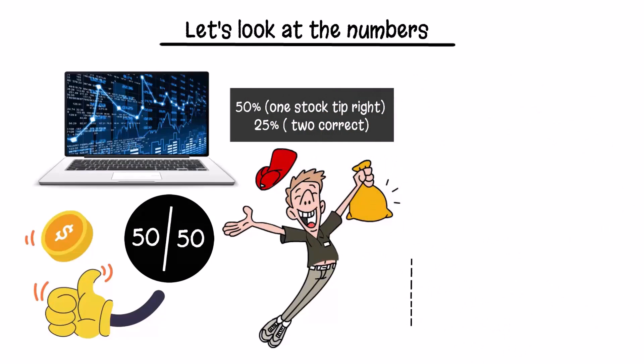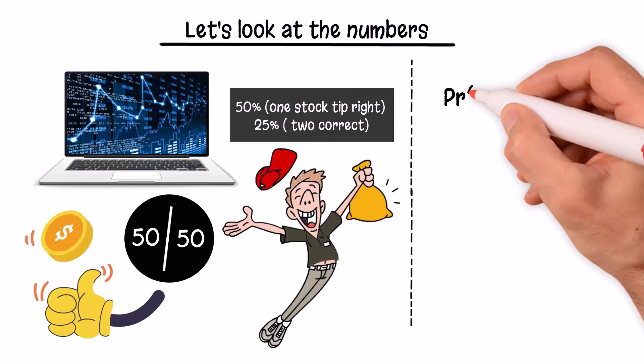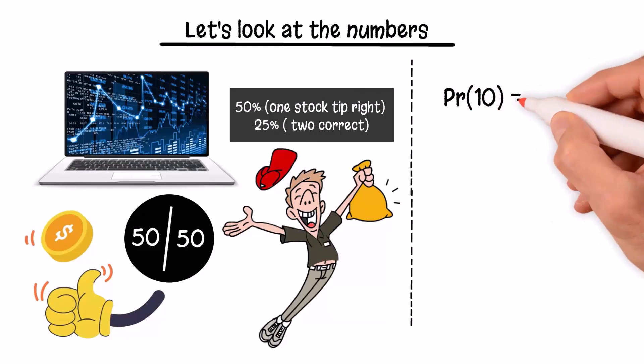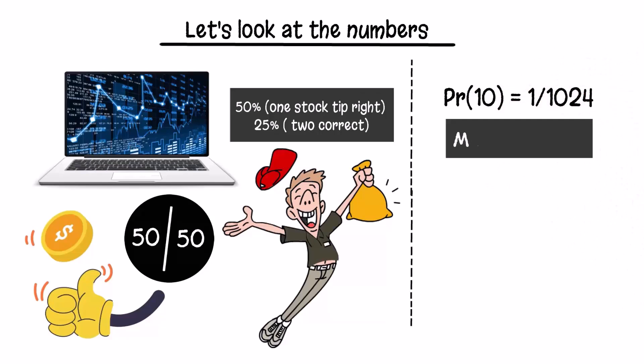The probability of getting 10 correct in a row is 1 out of 1,024. Mathematically, it is the following: 1 divided by 2, so 0.5 to the power of 10. This is 1 divided by 1,024.